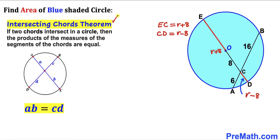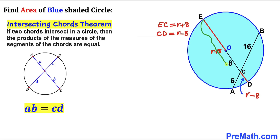Now let's recall the intersecting chords theorem. According to this theorem, if two chords intersect in a circle, the product of the measures of the segments of the chords are equal. We have two chords intersecting, giving segments A, B, C, and D, and we write A times B equal to C times D. So let EC be lowercase a, CD be lowercase b, BC be lowercase c, and AC be lowercase d.